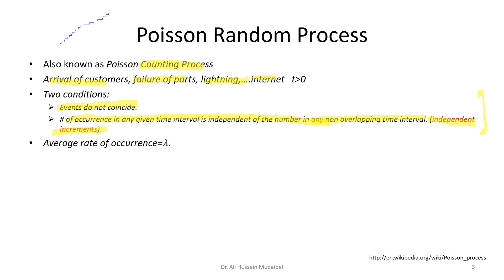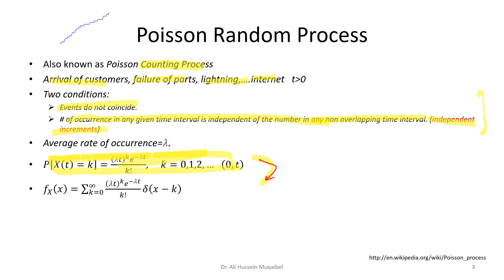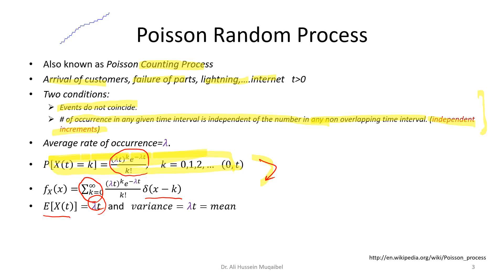The average rate of occurrence is lambda, and the Poisson probability formula has exponential minus lambda t, with lambda t raised to the power k divided by k factorial. Since it is a discrete counting process, the PDF uses delta functions summed over all possible numbers of occurrences. For the Poisson process, the expected value of x(t) is lambda t, and the variance also equals lambda t — a special case where mean and variance are equal.